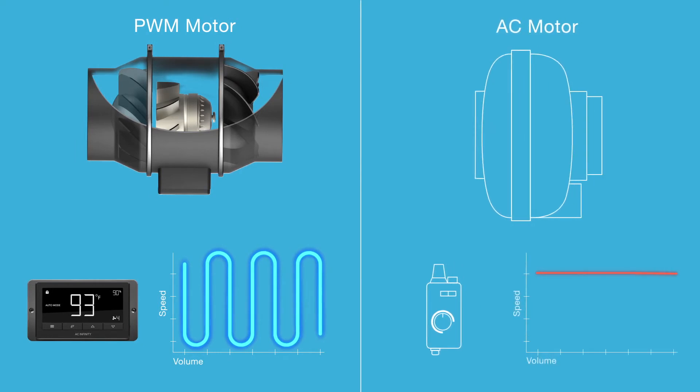In comparison, AC-powered duct fans simply suppress the voltage to stall fan speeds, forcing its motors to run loud and inefficiently.